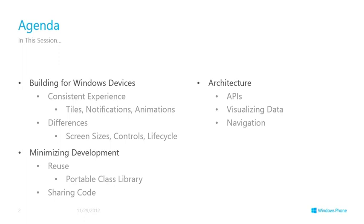We're going to talk about a section on minimising development. This is all about how you can reuse code - what code is reusable, what bits are not, and then for the bits where we've got subtle differences, what are some of the techniques to share code where it's common and be able to incorporate platform-specific code where we need to. And then there's the architecture of the application - things you can do to architect your app to encourage the most reuse, typically MVVM and patterns like that.